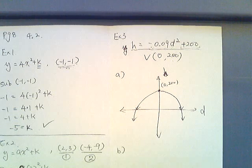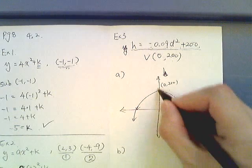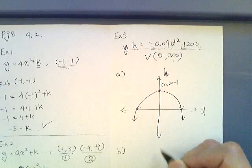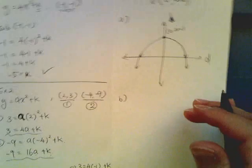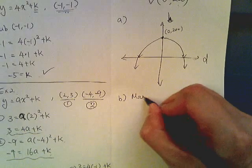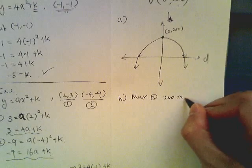Now b, b is a bit different thing. So it says what is the approximate height or the max height. Max height is occurring at the max value of this graph which is at 200. So I'm gonna say max at 200 meters.